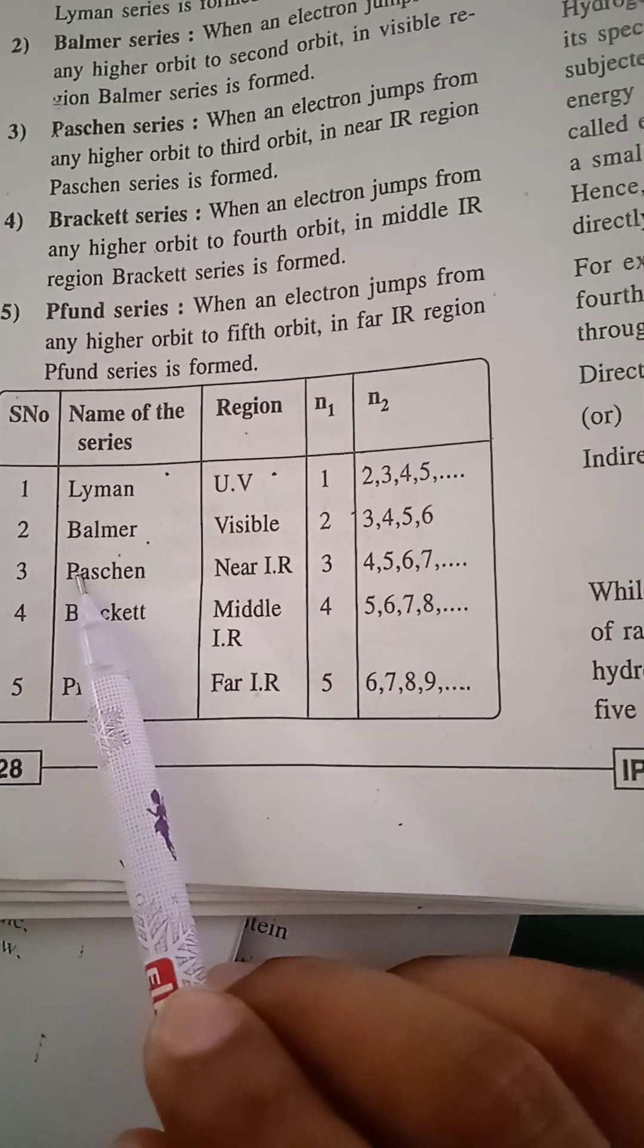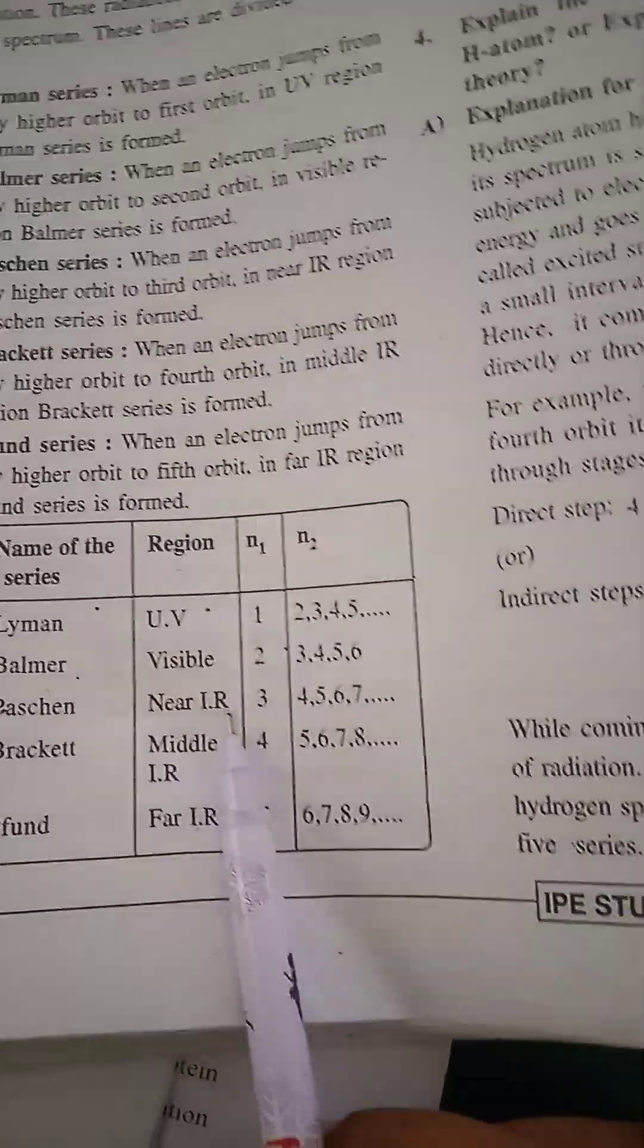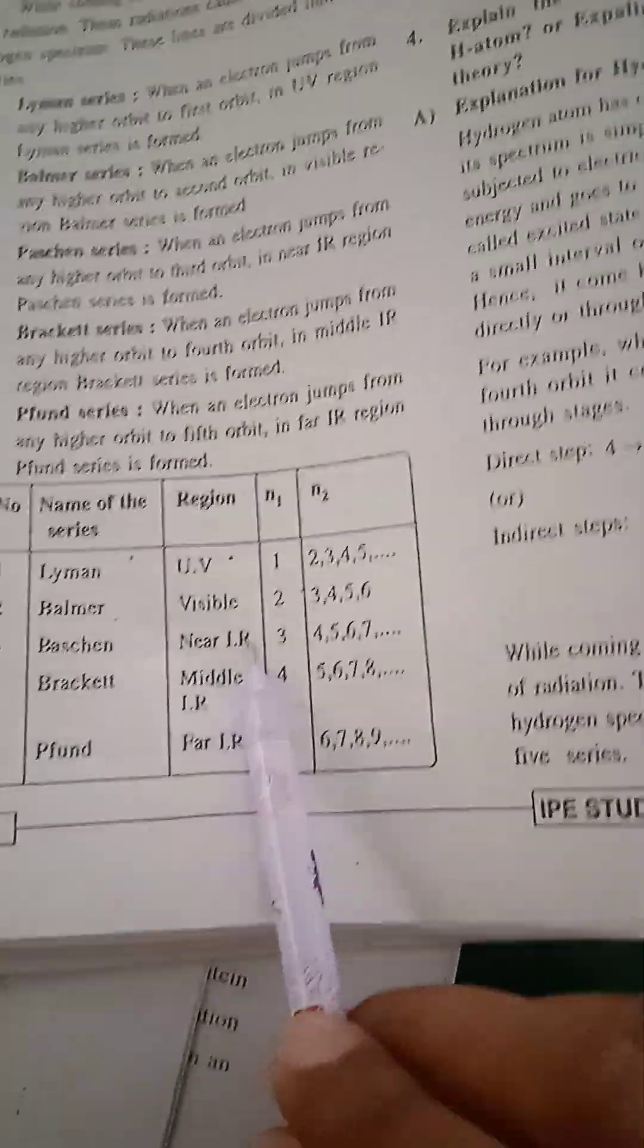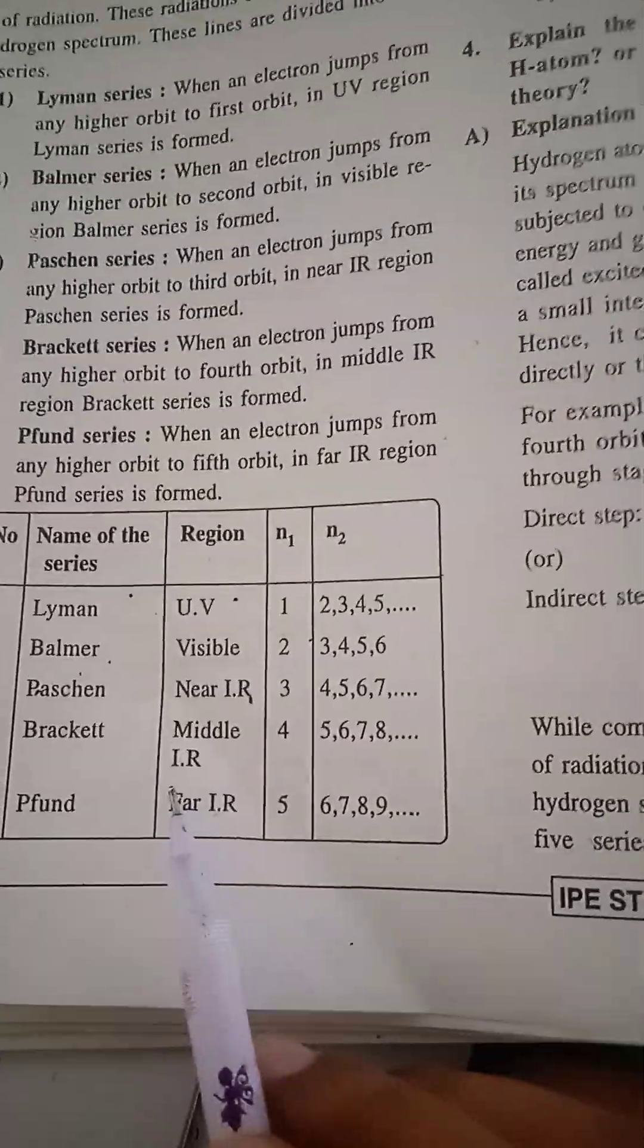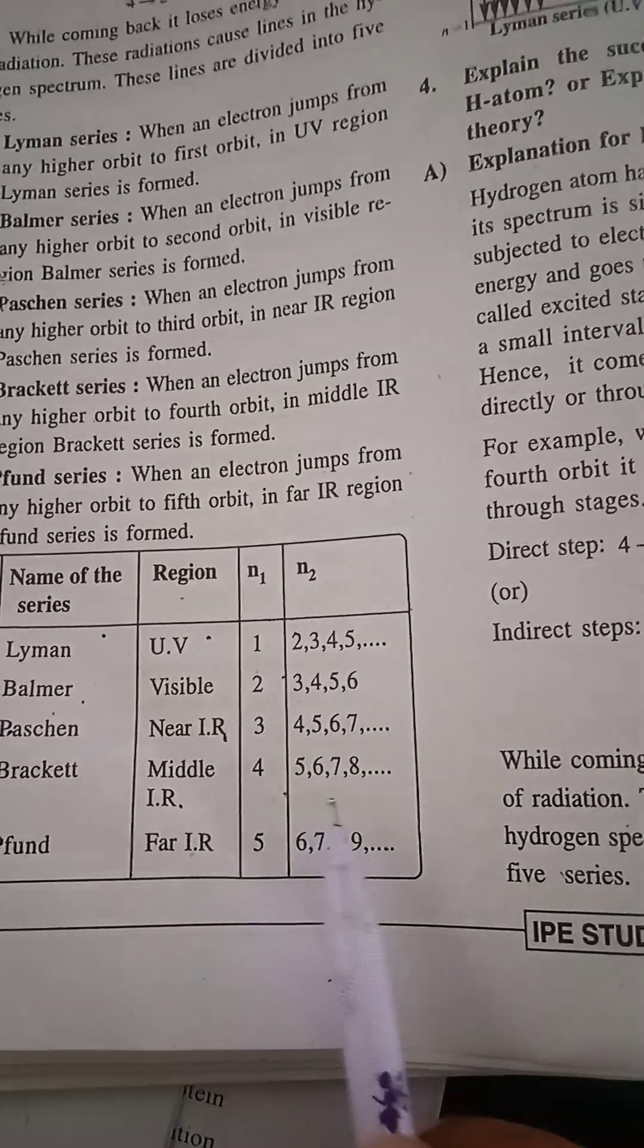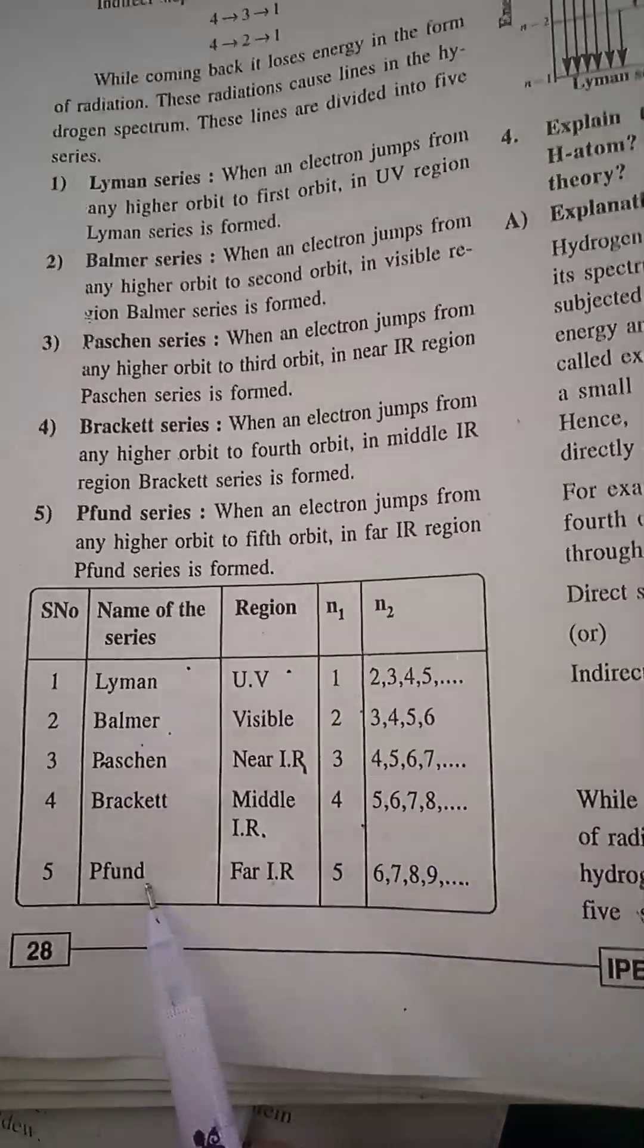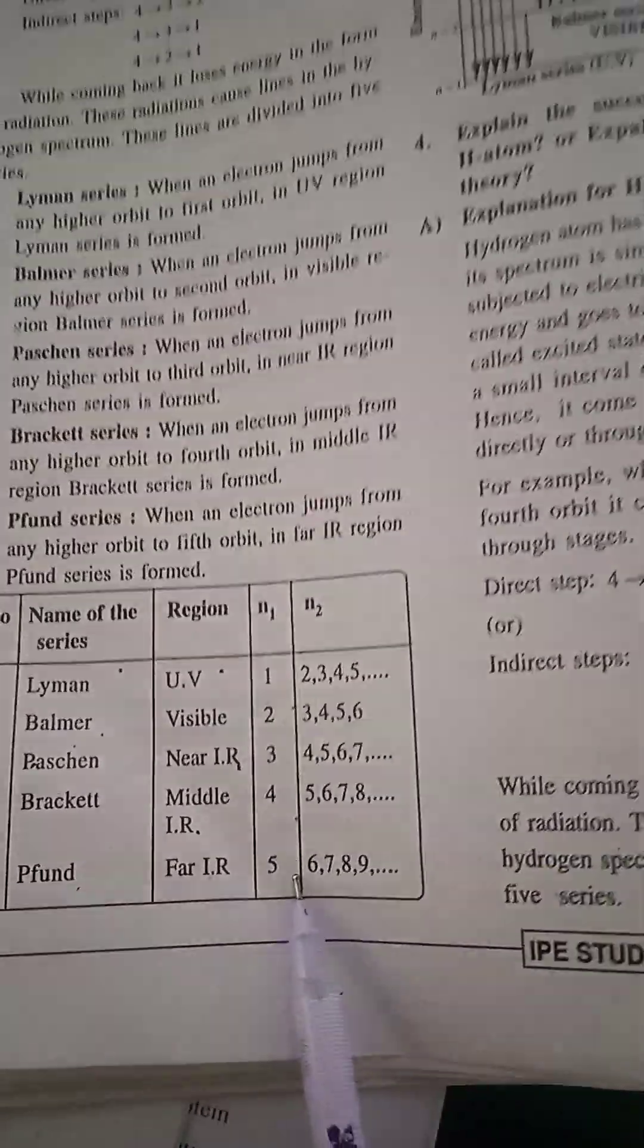Next, Paschen, region near IR. N1 equals 3, N2 equals 4, 5, 6, 7. Next, Brackett, region middle IR. N1 equals 4, N2 equals 5, 6, 7, 8. Next, Pfund, far IR. N1 equals 5, N2 equals 6, 7, 8.